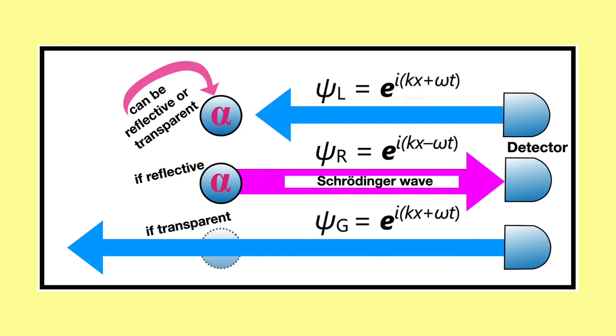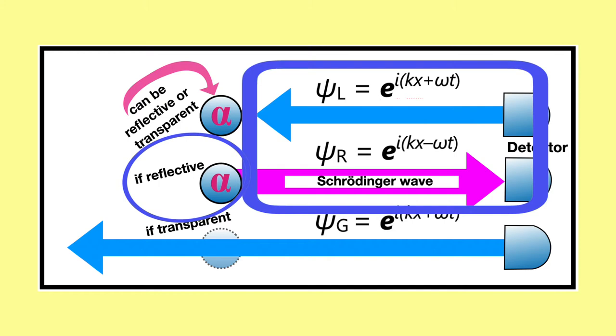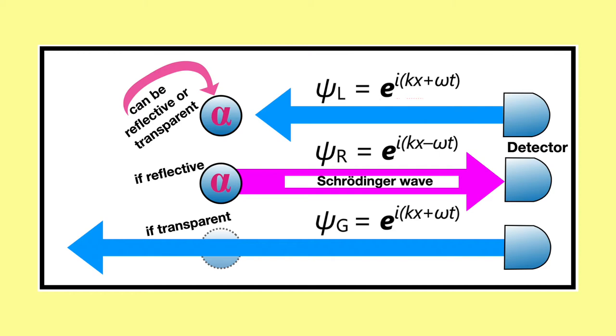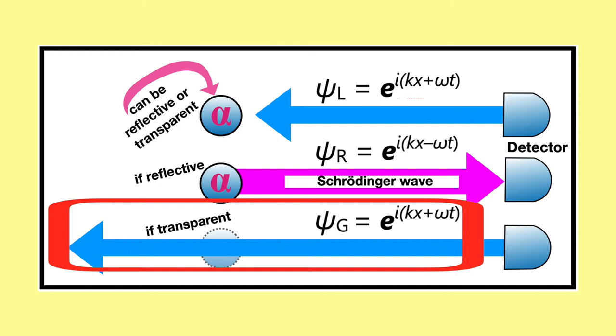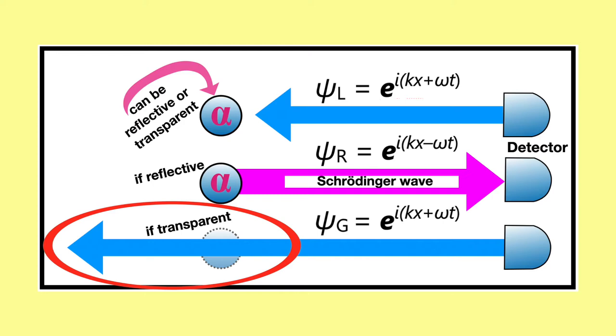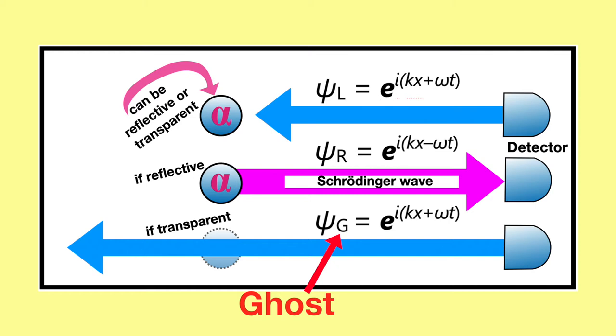The model we're building is slightly more complicated because particle alpha can present itself to a wave either as transparent or reflective. It makes this decision at random. If it is reflective, then the incoming psi L is reflected back as an outgoing psi R. But on the other hand, at random, the particle can present itself as transparent, which is what it does most of the time, and therefore an incoming wave from the right can pass straight through without ever meeting a particle and go off into the vacuum.